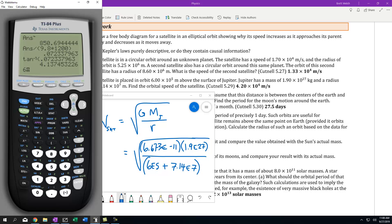I'm going to start with 6 times 10^5 plus 7.14 times 10^7. I'm going to hit enter. That is my denominator.